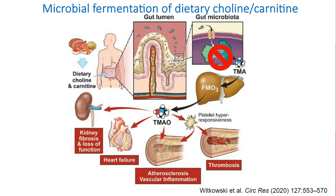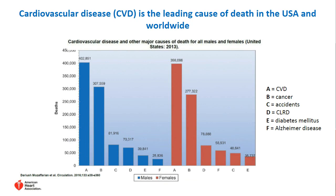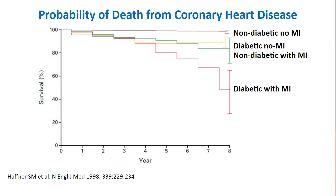Driven by these discoveries, we decided to look: is there any other gut microbial metabolite that can be associated with cardiovascular disease? We look into cardiovascular disease because it's the main cause of mortality both among men and women in the United States, but also worldwide. We are also interested in looking into pathways enriched in individuals with type 2 diabetes. This comes from the observation by Hoffner and colleagues showing that individuals with diabetes have similar survival rates from coronary heart disease as individuals without diabetes but with previous MI, while survival rates of individuals with diabetes and previous MI are much worse. In other words, diabetes itself is a risk factor for heart disease and stroke.